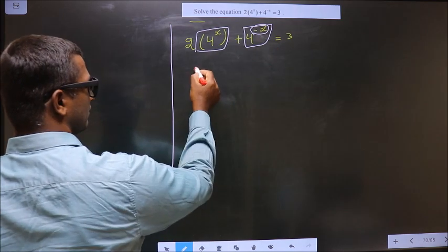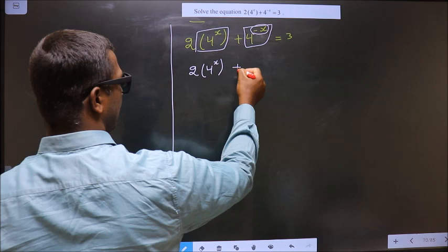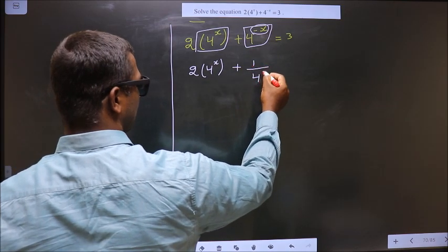So for that, what I do is I take this to the denominator, thus making it 4^(+x).